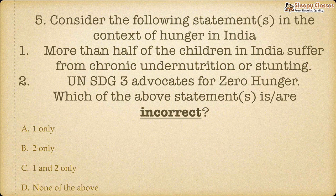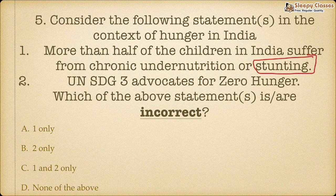Last question of the day: consider the following statements in the context of hunger in India. First statement: more than half of the children in India suffer from chronic undernutrition or stunting. Please make sure you know the difference between stunting, wasting, and malnutrition — these are common exam question types. If you don't know, search it and write it in the comments, because writing helps retention.